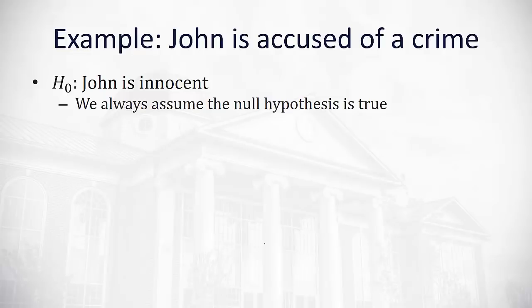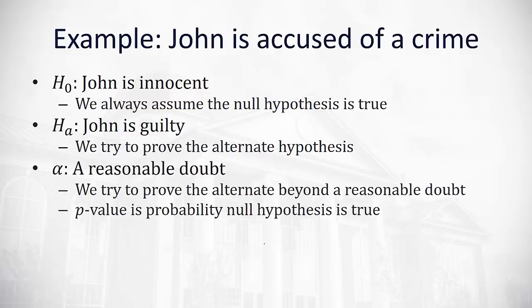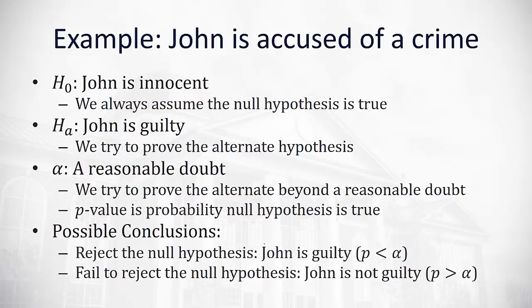We assume the null hypothesis is true as the prosecutor attempts to prove an alternative hypothesis that John is guilty. Now the catch is John has to be proven guilty beyond a reasonable doubt. That reasonable doubt threshold is our alpha. Alpha is that smallest probability where we still believe that John is innocent. The p-value is the probability he actually is innocent, and if that p-value gets too small, we say we've proven beyond a reasonable doubt that John is guilty.